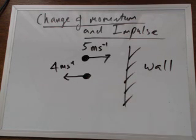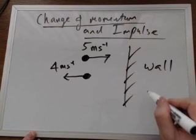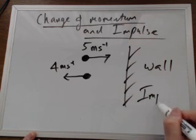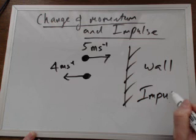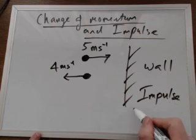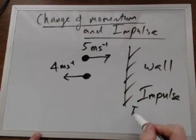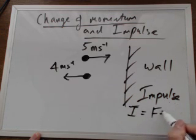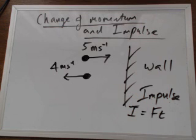It's going to hit the wall for a small moment of time. A force acting for a small moment of time is often known as an impulse. Impulse I is equal to the force times the time of the collision.